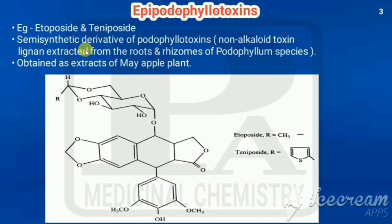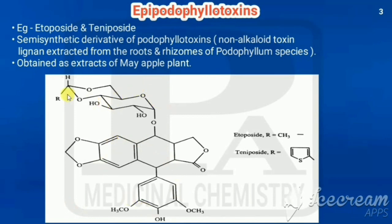Next are epipodophyllotoxins. Examples are etoposide and teniposide. They are synthetic derivatives of podophyllotoxins, which are non-alkaloid toxin lignans extracted from the roots and rhizomes of Podophyllum species — the May apple plant. The structure has an aglycone part and a glycone part connected by a glycosidic linkage. Where we have a methyl group, that is etoposide; where we have a methyl thiazolide group, that is teniposide.